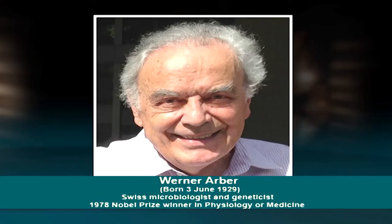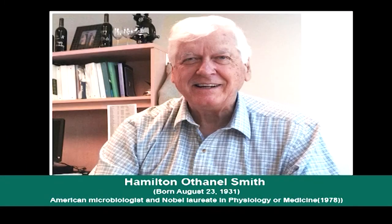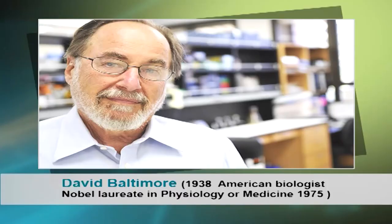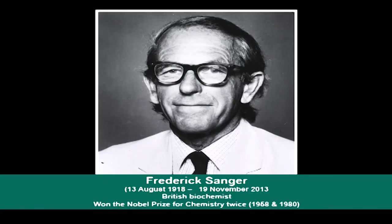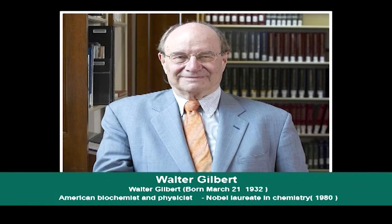Werner Arber and Hamilton Smith in 1970 isolated the first restriction enzyme HindII. David Baltimore and Howard Temin explained the importance of reverse transcriptase in the same year. In 1975, Edwin Southern introduced the Southern hybridization technique, which plays a main role in gene mapping using RFLPs. Frederick Sanger and Walter Gilbert in 1977 developed chain termination and chemical methods of DNA sequencing. Philip Sharp and Rich Roberts showed that mammalian viral genes were interrupted by DNA sequences not found in the mature mRNA. Gilbert in 1978 named these sequences introns — a common feature of eukaryotic genes.